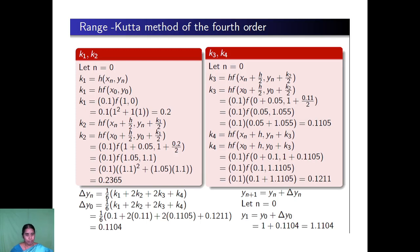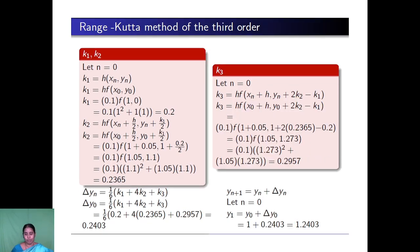Using k1, k2, k3 and k4, we calculate delta y0 as 1 by 6 times k1 plus 2k2 plus 2k3 plus k4, which gives 0.1104. Then, using delta y0, we calculate yn plus 1. Substituting n equal to 0, the equation becomes y1 equals y0 plus delta y0, and we obtain y1 equals 1.1104.